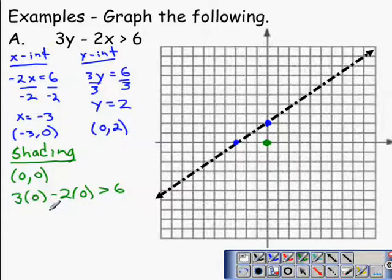3 times 0 minus 2 times 0 gives us 0, and 0 greater than 6 is a false statement.